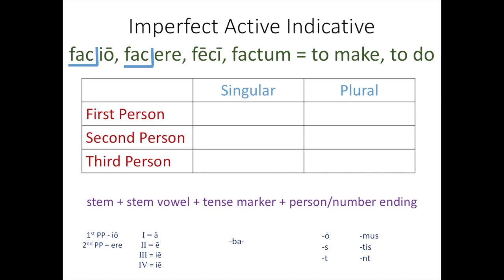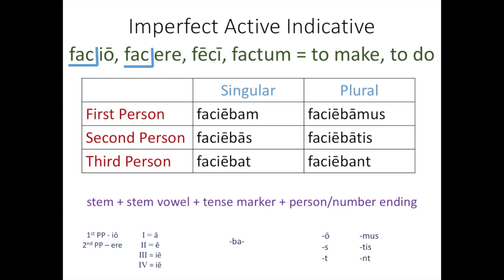So first we start with our stem, F-A-C, and then our stem vowels that we add for the imperfect for both third IO and fourth is IE. So we add those in. And then our tense marker paired with our person and number endings. And this is where you add in the BA, M, BA, S, BA, T, BA, mus, BA, tis, BA, nt that you're used to from your other conjugations.